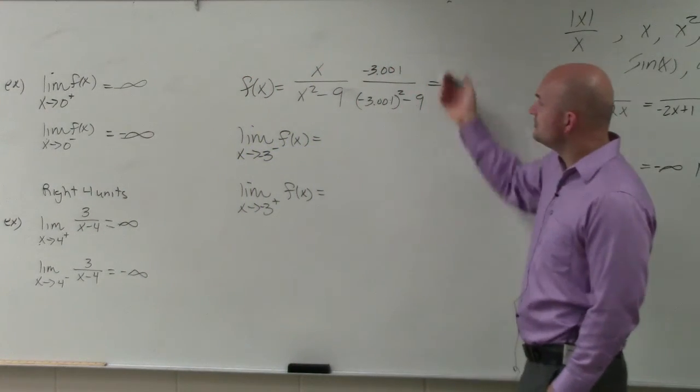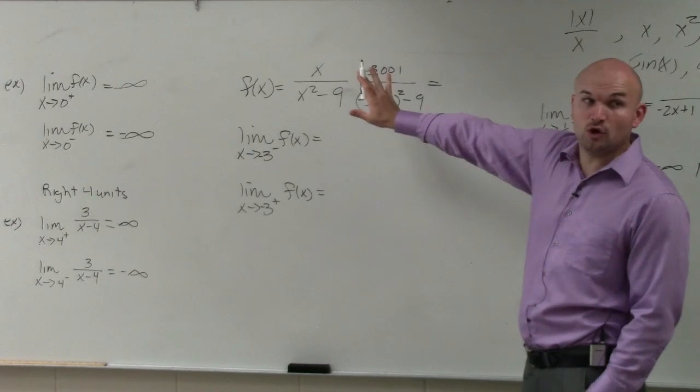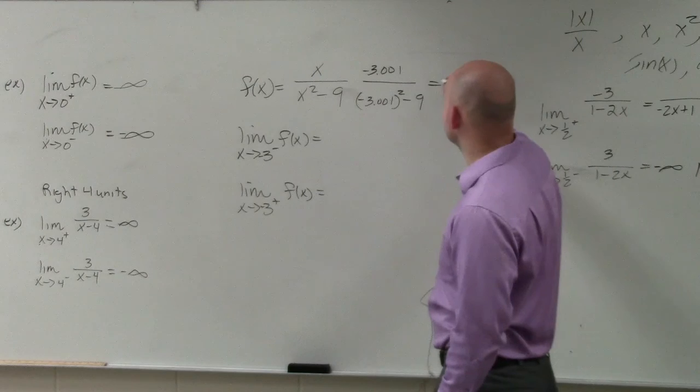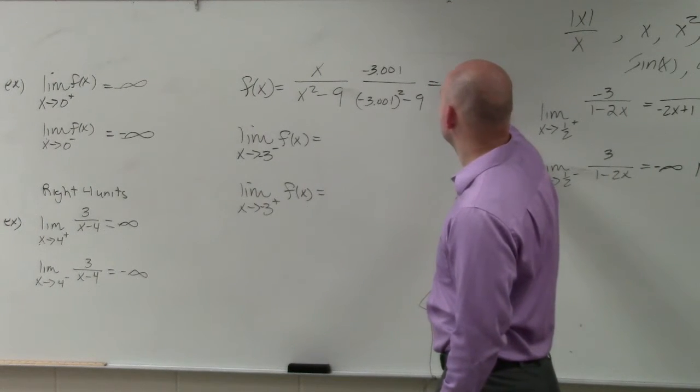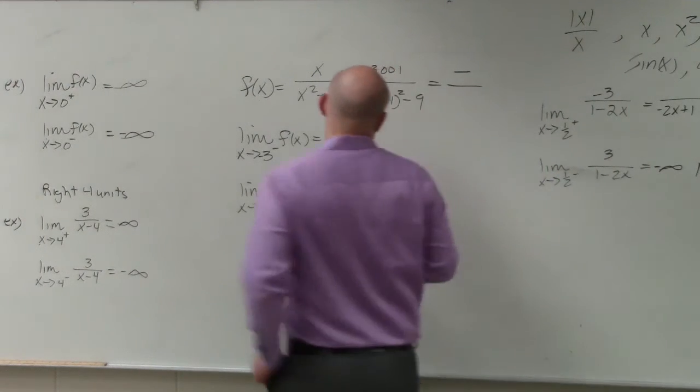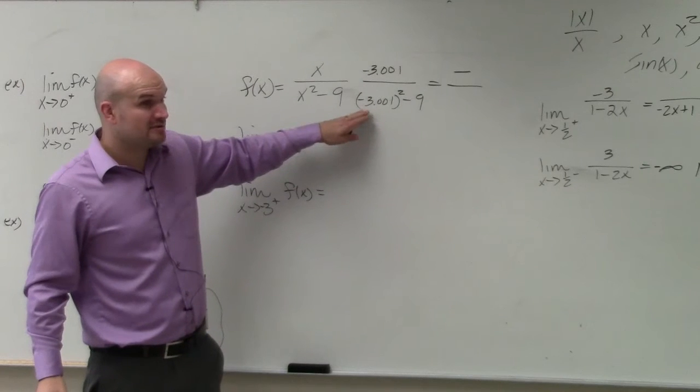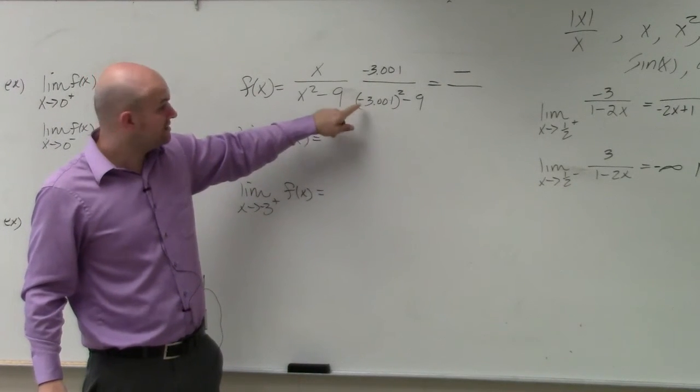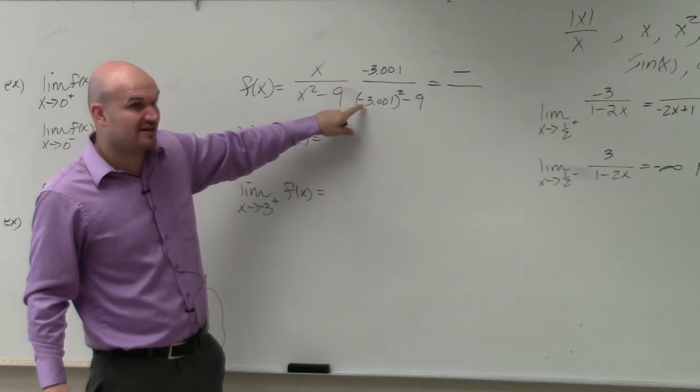So from the left-hand side, again, and we're only caring about signs, in the numerator is going to be a positive or negative number? Negative. In the denominator, if you have a number that's now larger than 3, this number squared is going to be larger than negative 3 squared.